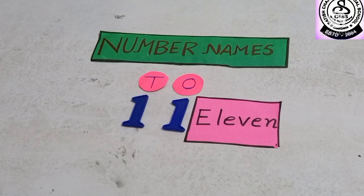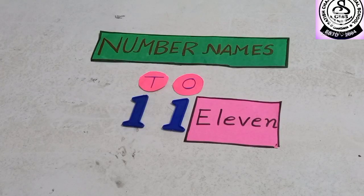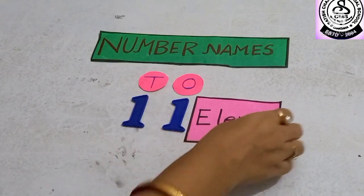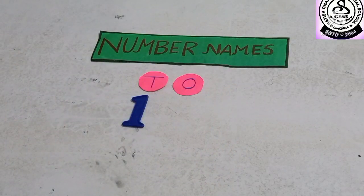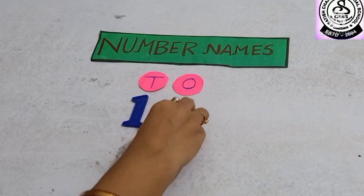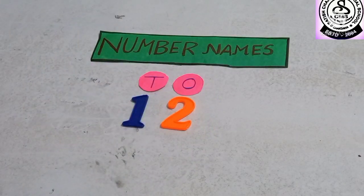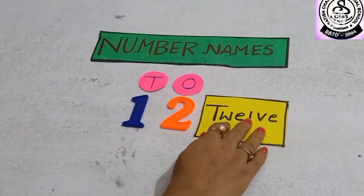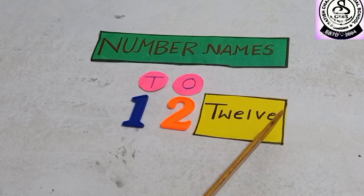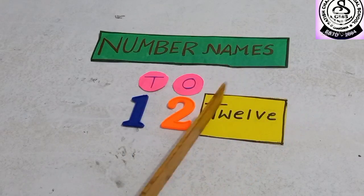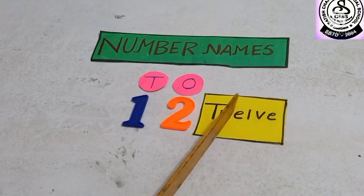What comes after 11? Can you tell me? Yes. After 11, 12. 1, 2, 12. What is the spelling of 12? T-W-E-L-V-E, twelve.